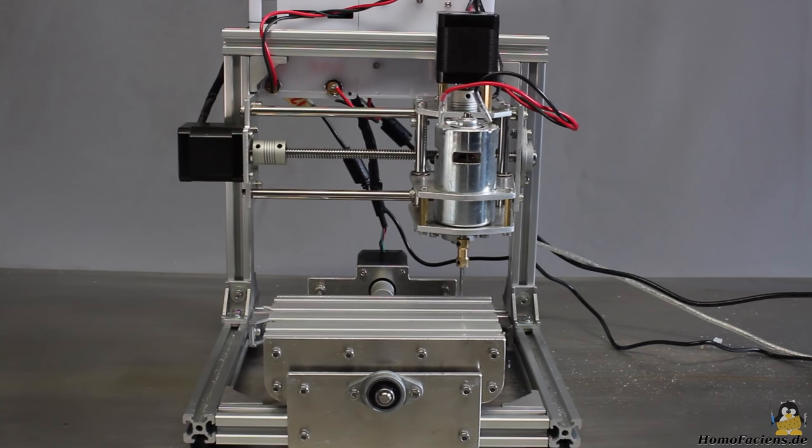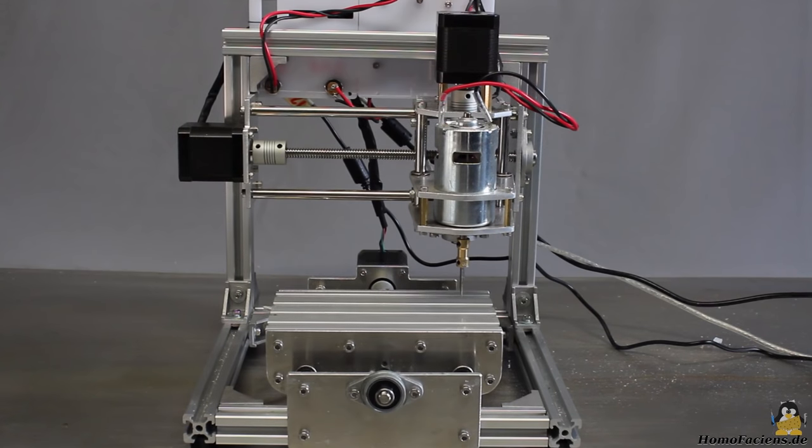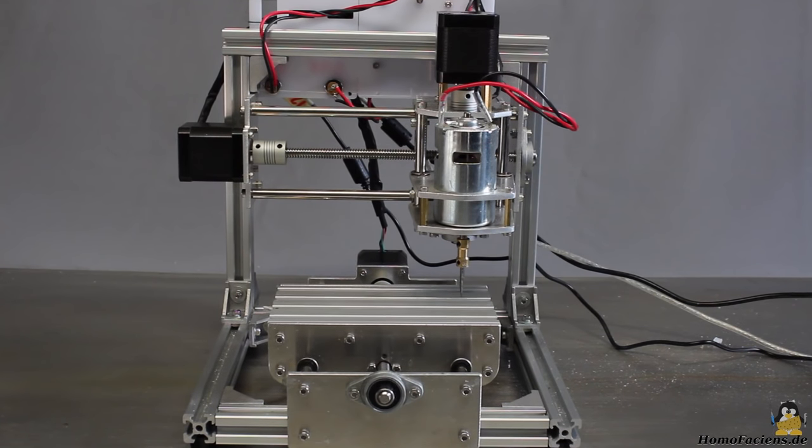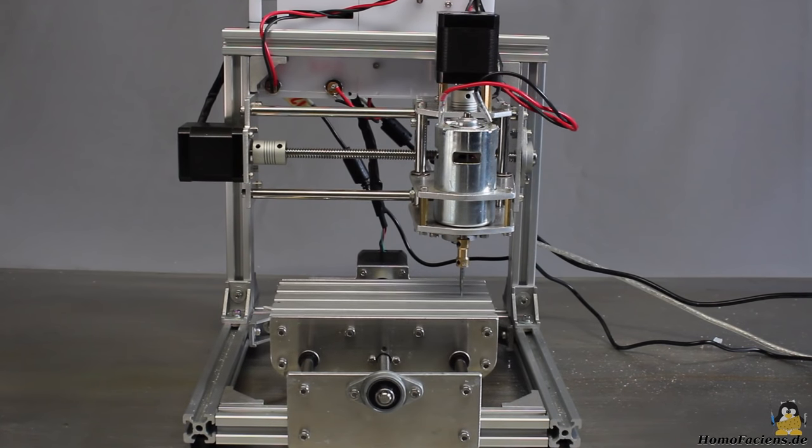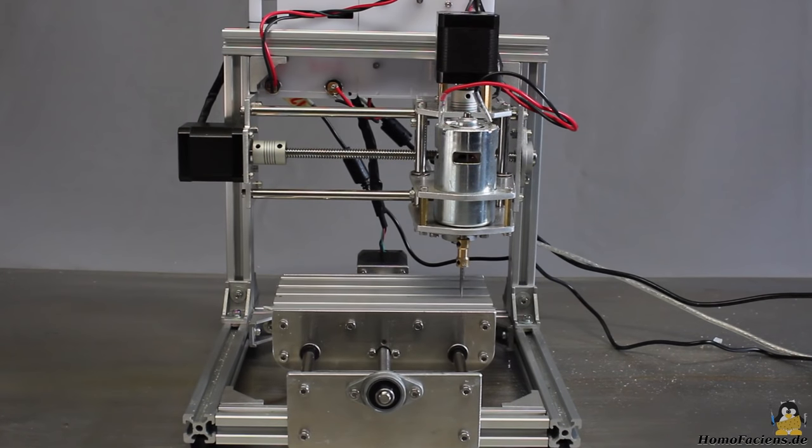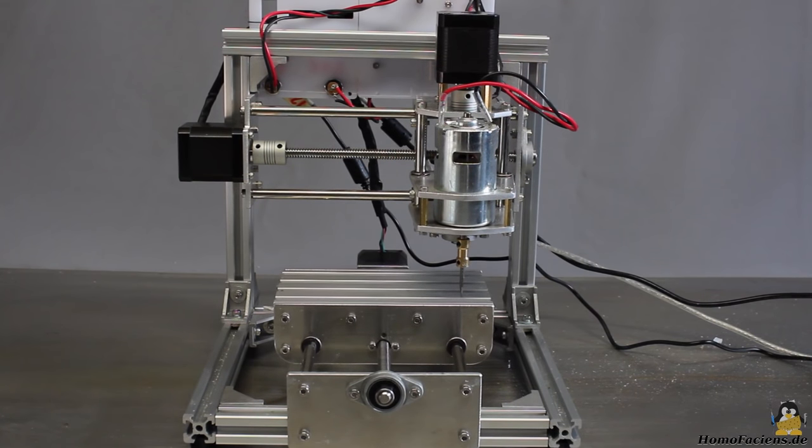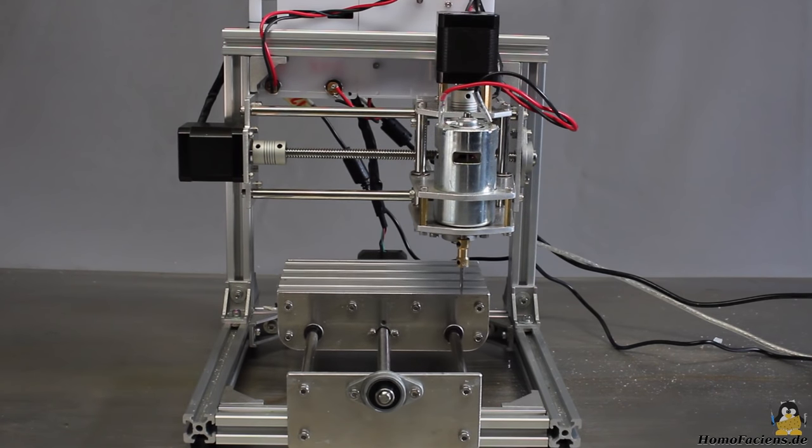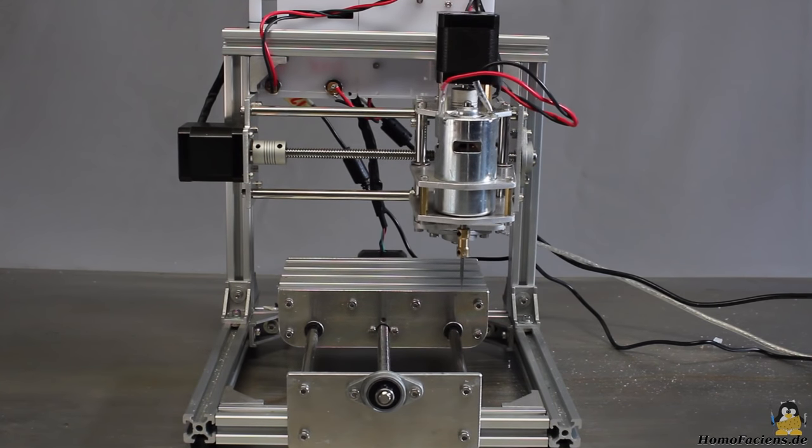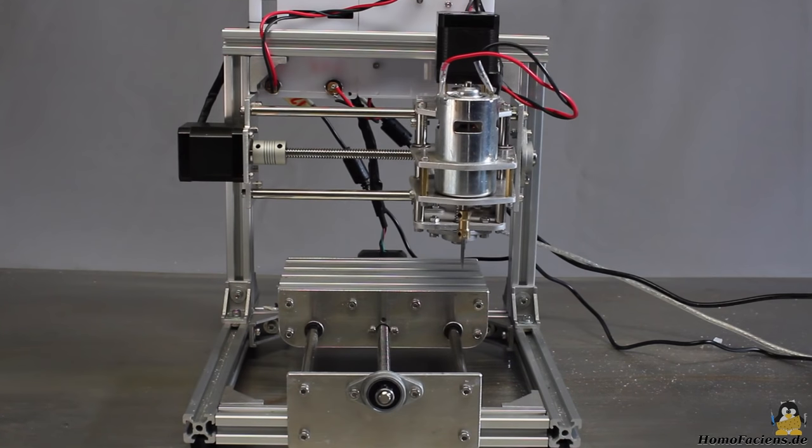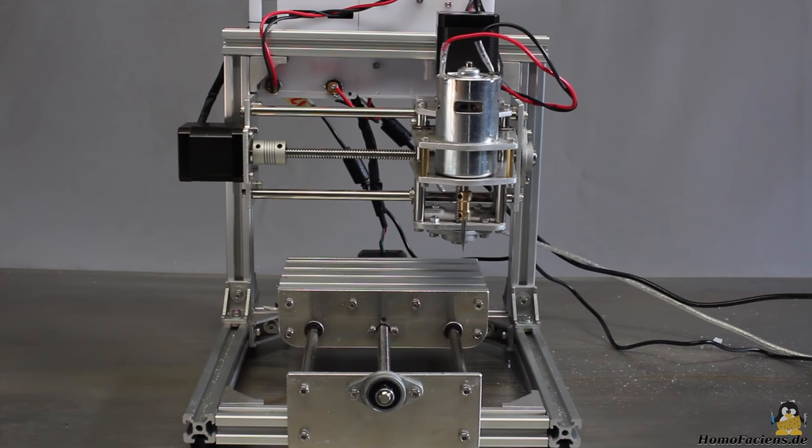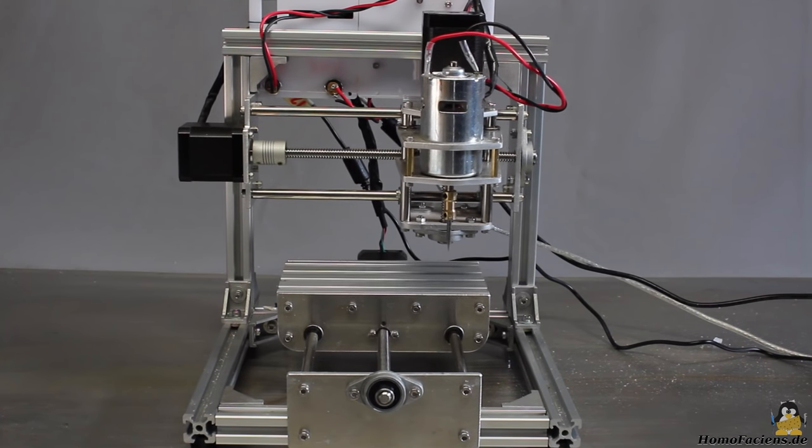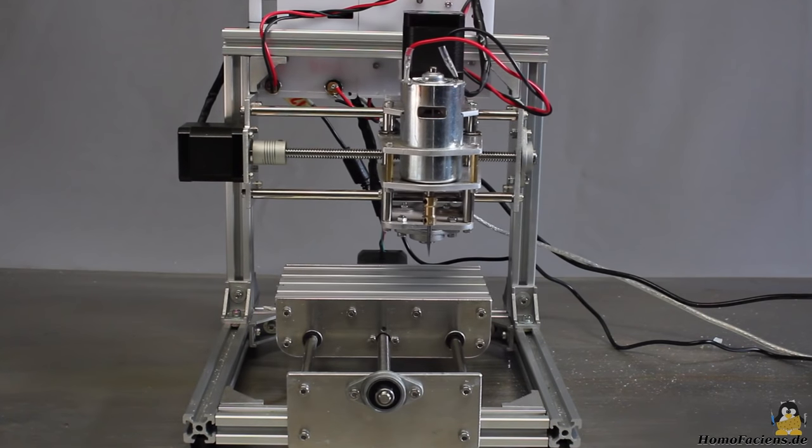The X axis can move for approximately 12cm, the Y axis can travel for about 10cm, and the Z axis for 4cm. The size of the CNC table is 15x9cm.